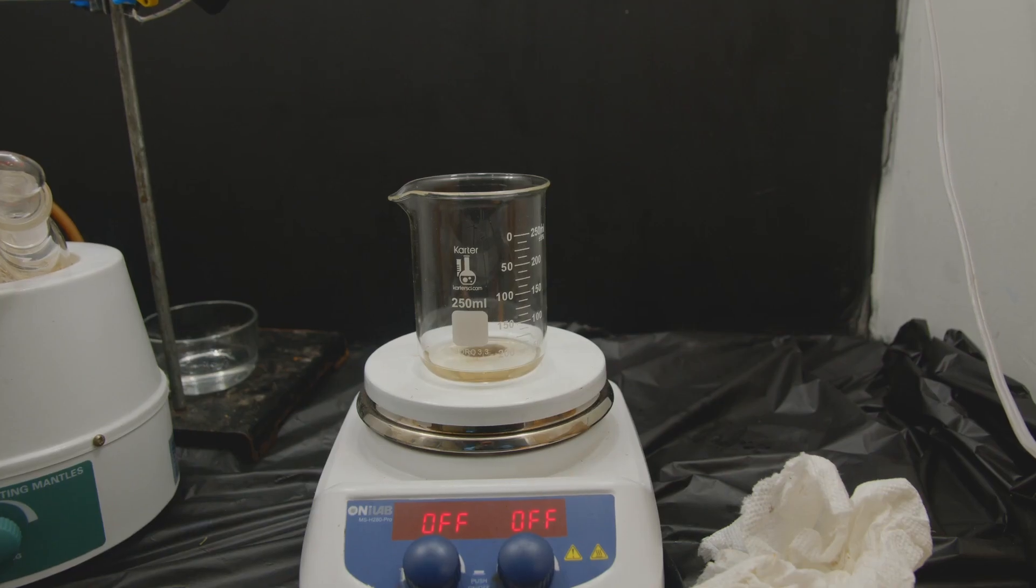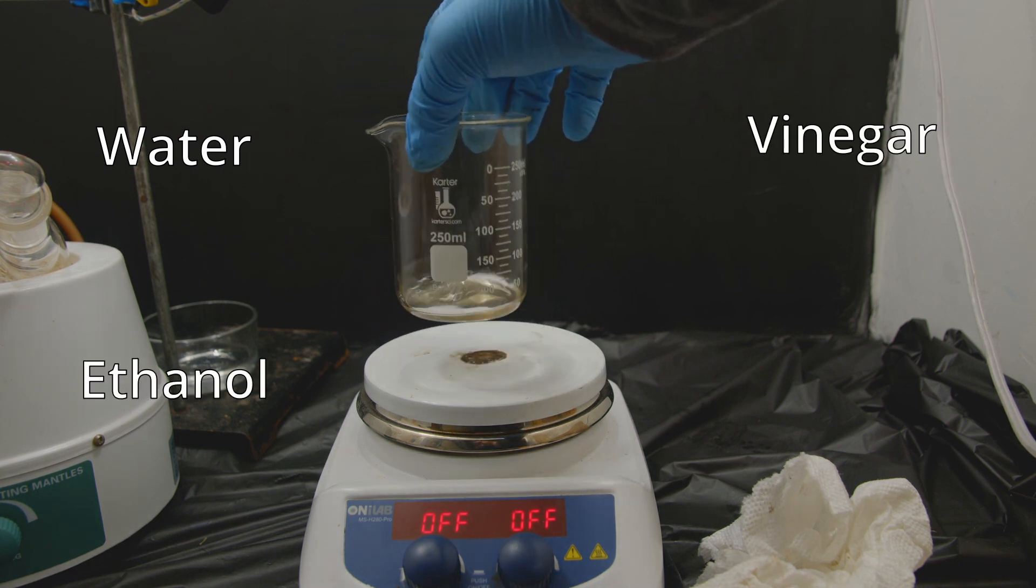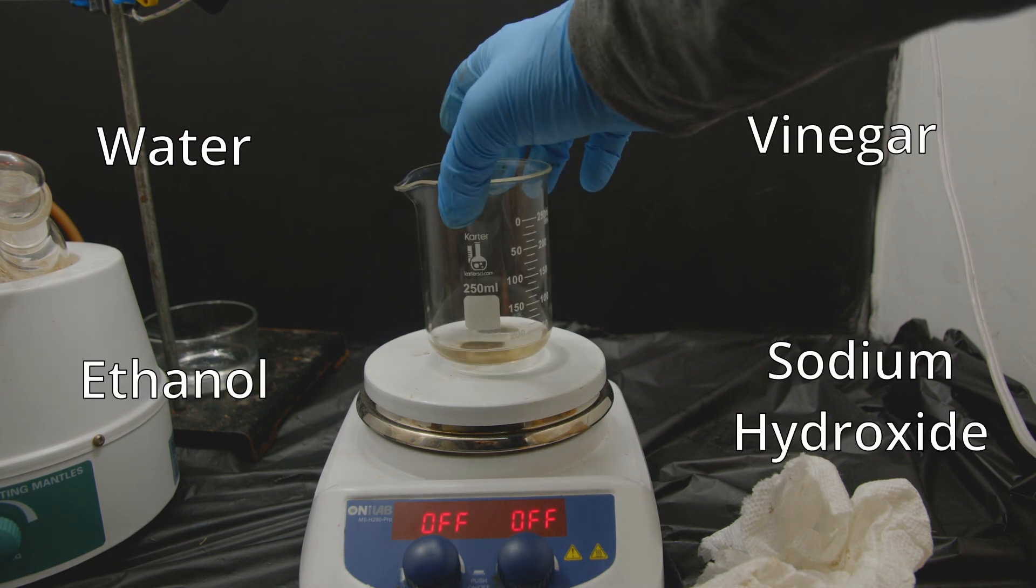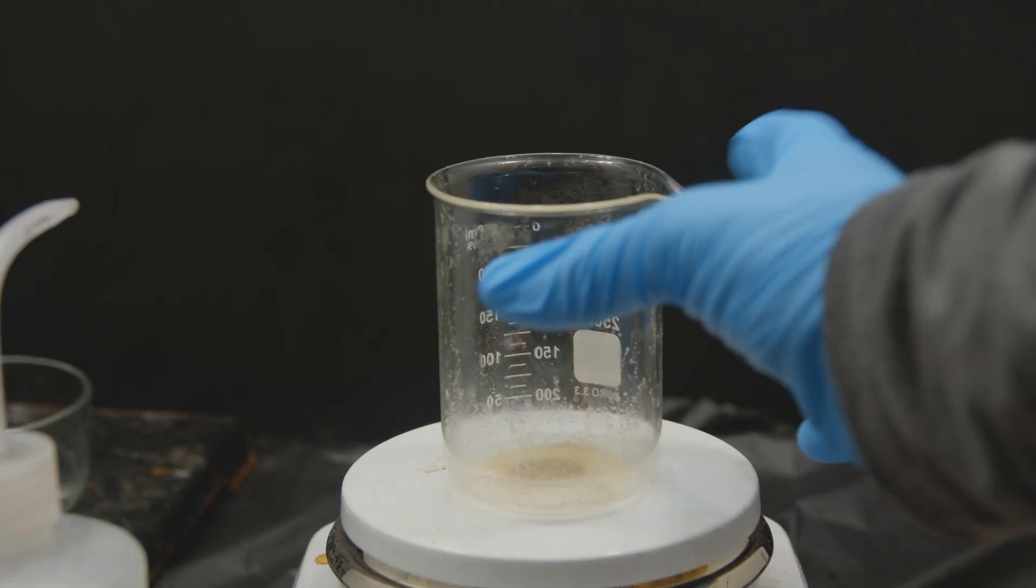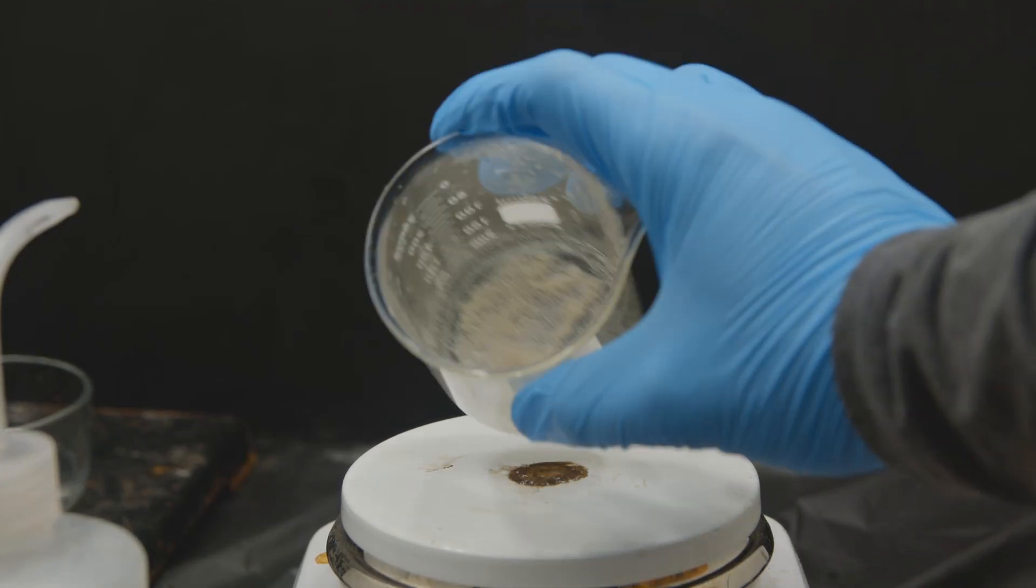So now what I have is a mix of water, ethanol, vinegar, and sodium hydroxide. So to remove the ethanol I boil off the remaining liquid and then I add some water back.